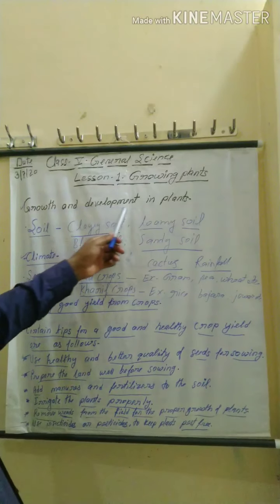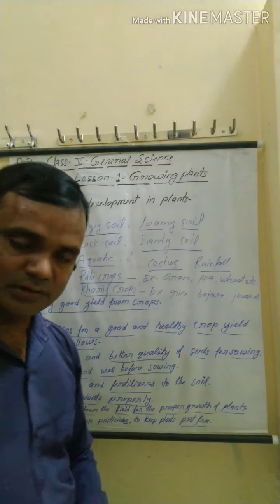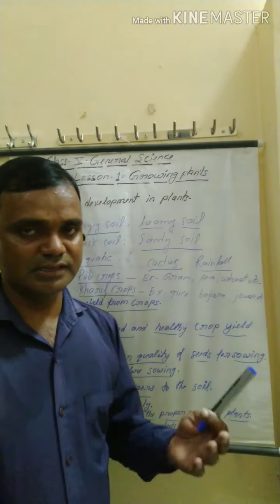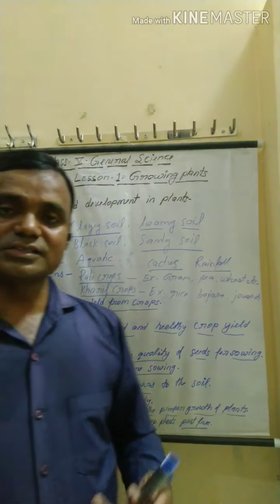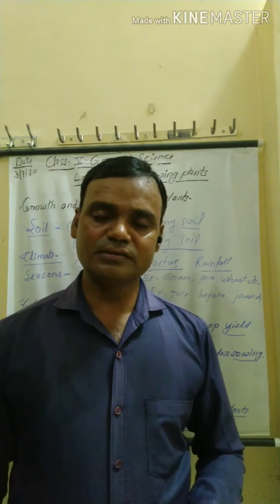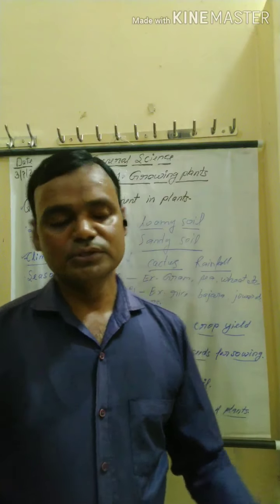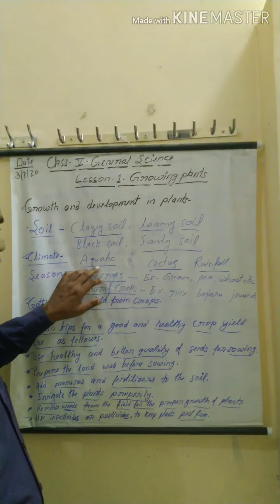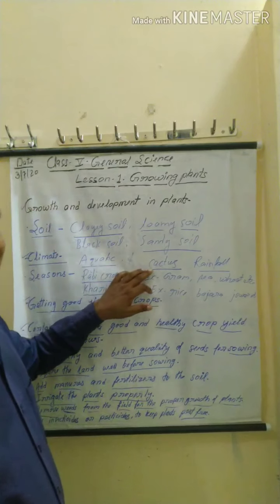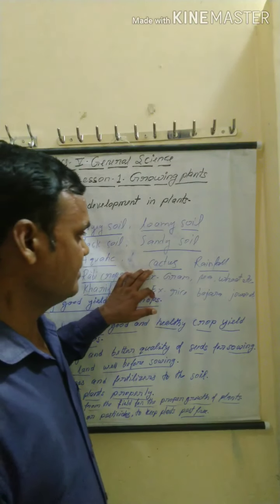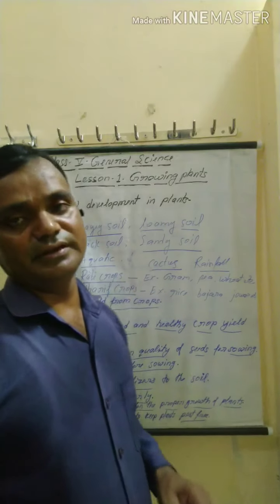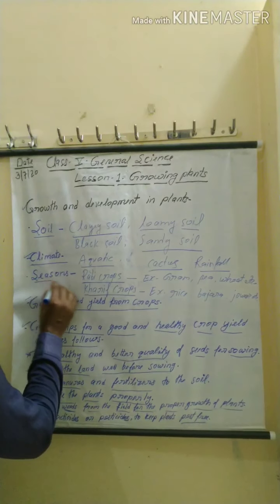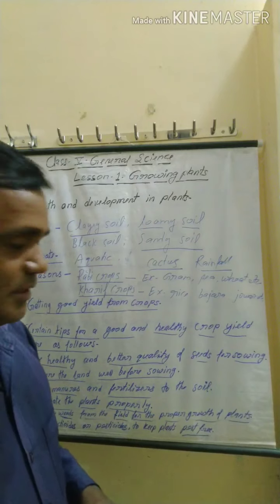Let me revise again. Growth and development in plants — many factors are responsible. Soils are found in different types: plain soils, loamy soils, black soils, red soils, and sandy soils. Different plants grow in different types of soil. Regarding climate, aquatic plants grow in water, desert plants like cactus grow in desert or sandy areas, rubber plants grow in rainfall areas with hot and humid climate. On the basis of seasons, crops are of two types: Rabi crops and Kharif crops.